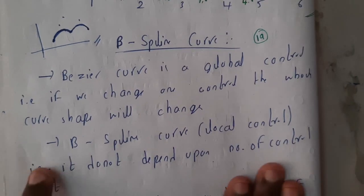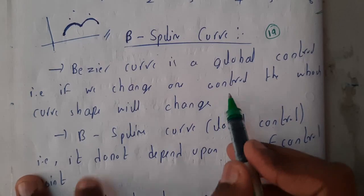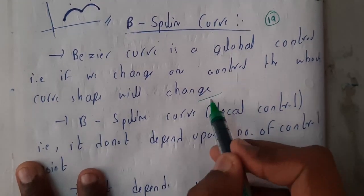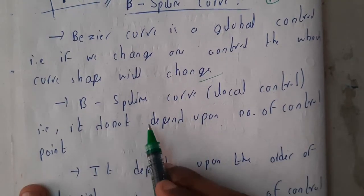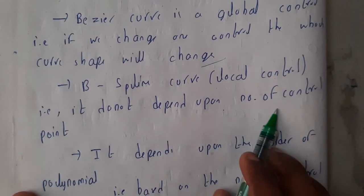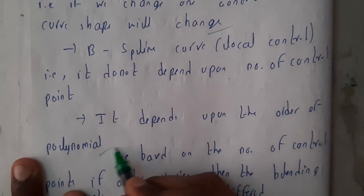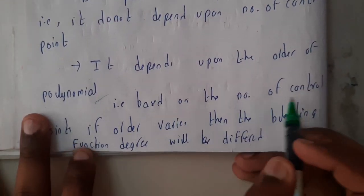Let us go through the points so you will have a clear idea. Bezier curves have global control - if we change any one control point, the whole curve shape will change. Whereas B-spline curves have local control - it does not depend upon the number of control points. It depends upon the order of polynomial based on the number of control points.